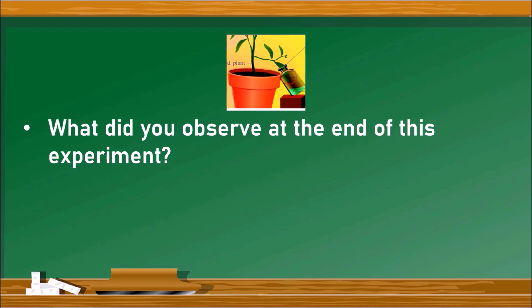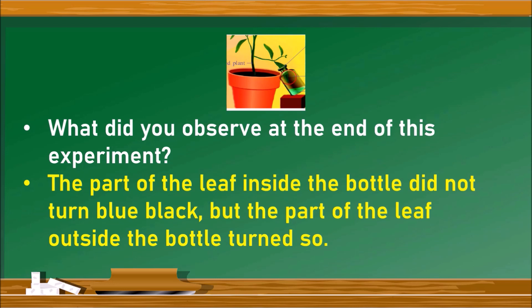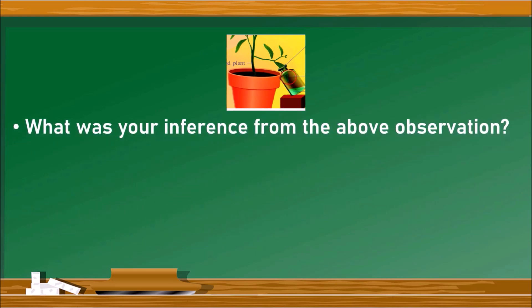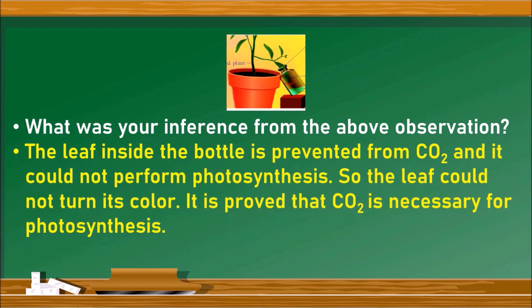At the end of the experiment, the part of the leaf inside the bottle did not turn bluish-black, whereas the part outside the bottle turned bluish-black. The inference is: the leaf inside the bottle was prevented from accessing carbon dioxide and could not perform photosynthesis. This proves that carbon dioxide is necessary for photosynthesis.